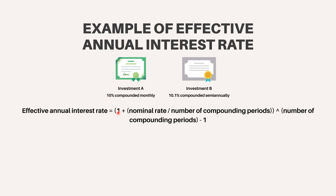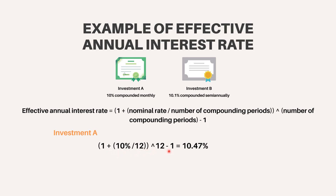The formula and calculations are as follows. Effective annual interest rate equals (1 plus nominal rate divided by number of compounding periods) to the power of the number of compounding periods, minus 1. For investment A, this would be: (1 + 10% / 12) to the power 12, minus 1, equals 10.47%.